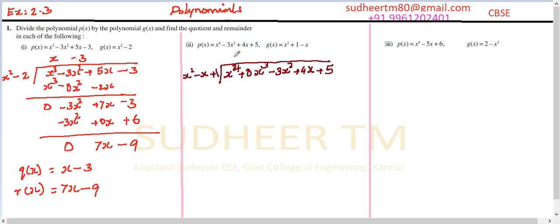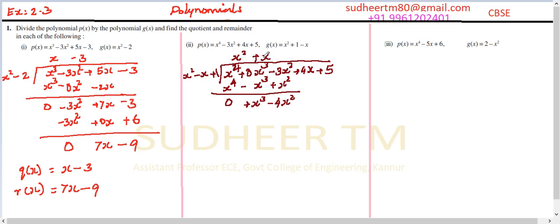Now x⁴ divided by x² gives x². Multiply: x² into x² is x⁴, x² into minus x is minus x³, and x² into plus 1 is x². Subtract: x⁴ minus x⁴ is 0, 0 minus minus x³ is plus x³, and minus 3x² minus x² is minus 4x². Now x³ divided by x² is x. Multiply: x into x² is x³, x into minus x is minus x², and x into plus 1 is plus x. Put back plus 4x. Then subtract: x³ minus x³ is 0.